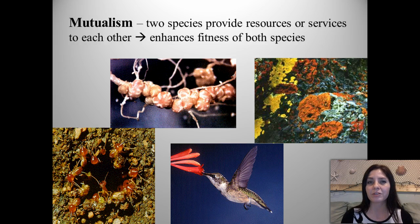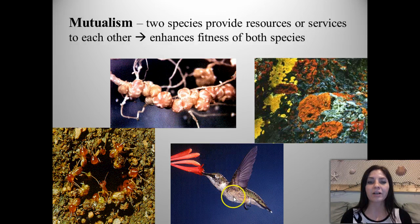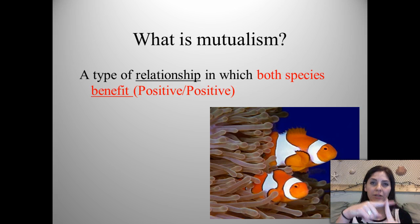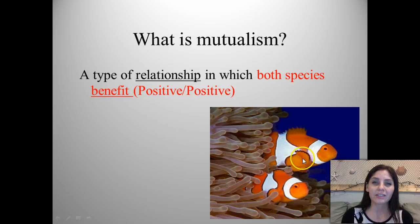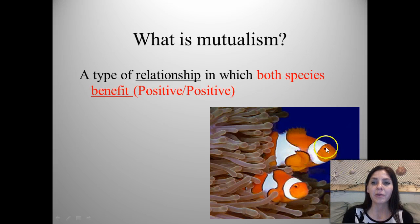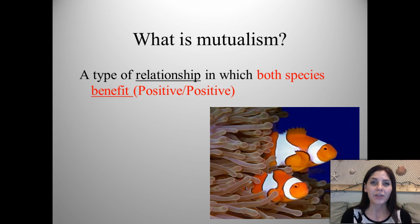In mutualism, both species benefit. Two species provide resources or services to each other, and it enhances the fitness of both. For example, a hummingbird helps to pollinate different flowers, and in return the hummingbird gets food. One of the most common examples is the clownfish and the sea anemone — Finding Nemo. The clownfish receives protection from the sea anemone, while the sea anemone benefits because the clownfish are very protective, guarding it from predators and sometimes leaving behind food pieces.